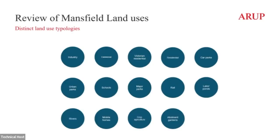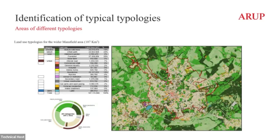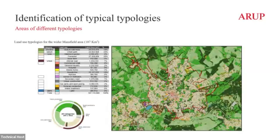The first thing we did was categorize the different land uses within Mansfield into different typologies — from industrial to allotment gardens to mobile homes to major parks. We then used satellite imagery and machine learning algorithms to classify the land use within Mansfield into certain types, which allowed us to make decisions as we moved forward. If done as a manual task, reviewing land use data could take hundreds or thousands of hours. By using satellite data and machine learning algorithms, it can be done in minutes or seconds, giving you the baseline from which to drive more decisions.